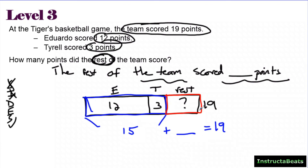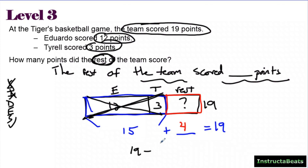15 plus my 'rest' is going to equal 19. To find this missing piece, you could start at 15 and add until you get to 19 and get the answer 4. Or you could get rid of the 15 by subtracting from your 19 — 19 minus 15 — to figure out what's left. That would still be 4. Either way works. If you draw your visual model, you can then solve it either way. The rest of the team had to score 4 points.